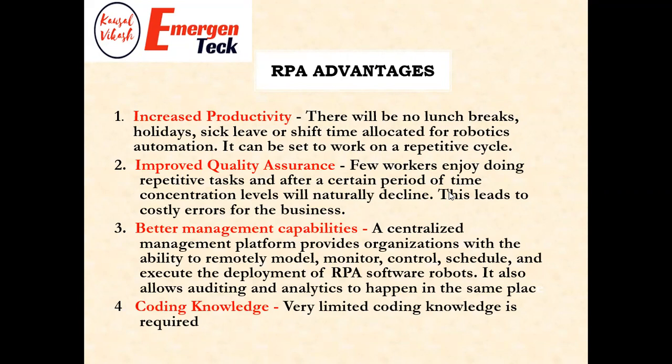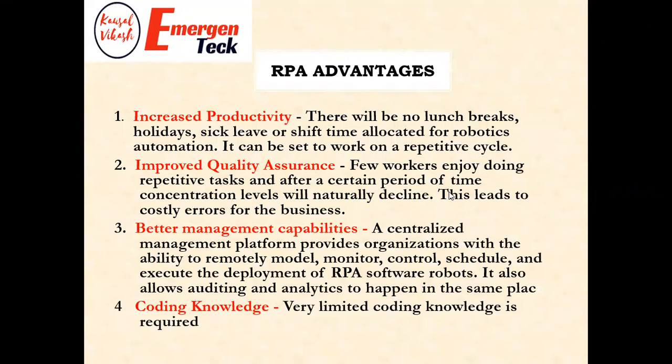Next is improved quality assurance. When humans work, mistakes can happen — sometimes costly ones for the organization. But robots produce 100% accurate results each and every time. The next benefit is better management capability through the centralized cloud platform — Orchestrator — where we can manage, schedule, and store processes. And lastly, very limited coding knowledge is required to kick-start with RPA.